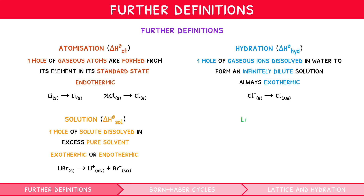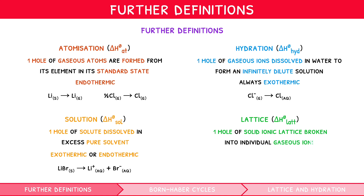And lattice enthalpy is the enthalpy change when one mole of an ionic lattice is broken into its individual gaseous ions. This process is endothermic. For example, BeF₂ → Be²⁺(g) + 2F⁻(g).